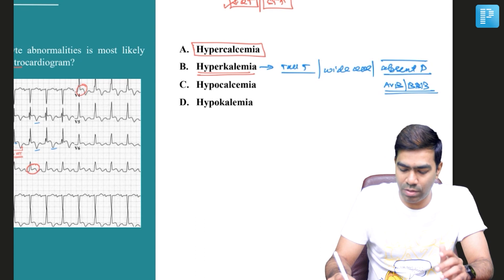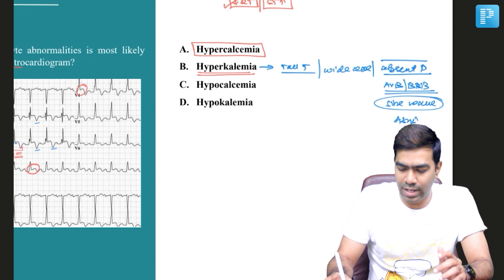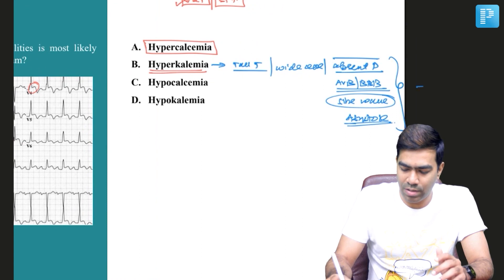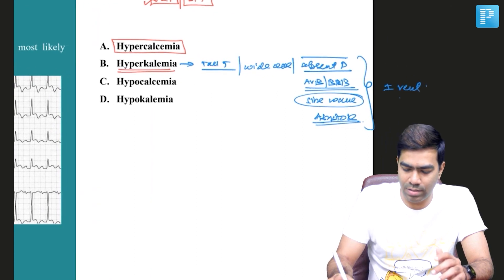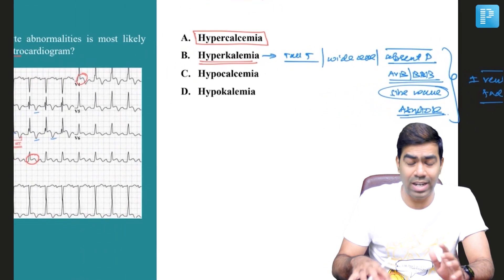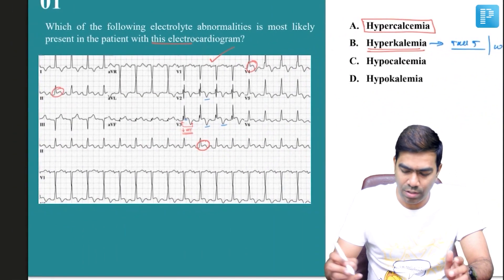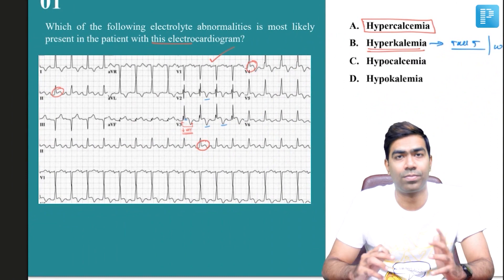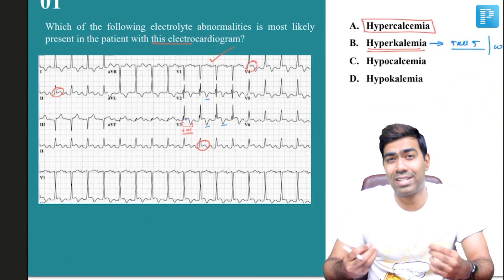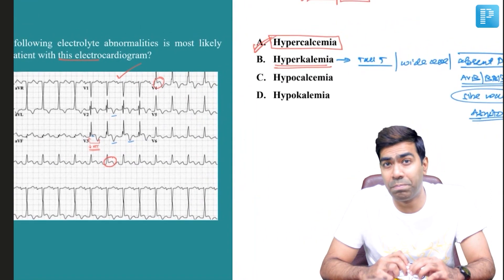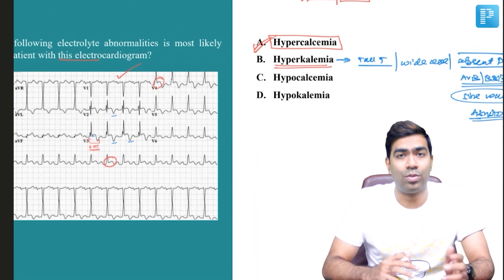Finally, hyperkalemia will end up with something called a sine wave pattern, which will result in asystole or a diastolic cardiac arrest. Apart from that, at any stage of hyperkalemia, you might have ventricular tachyarrhythmias — VT or VF. So since you don't see tall T waves here, you don't see wide QRS here, and you don't see those characteristic absent P waves, that is the reason why I'm going to make a diagnosis of hypercalcemia with regards to this EKG.